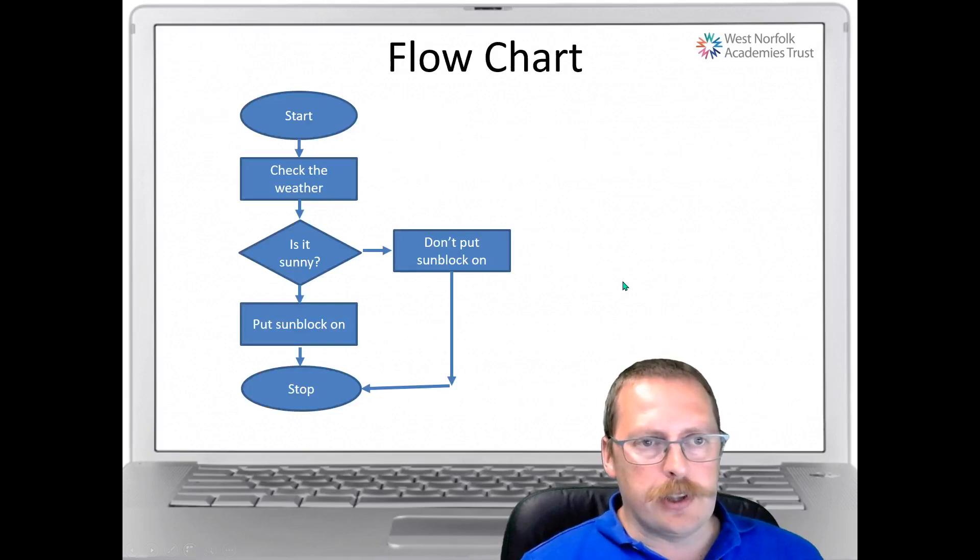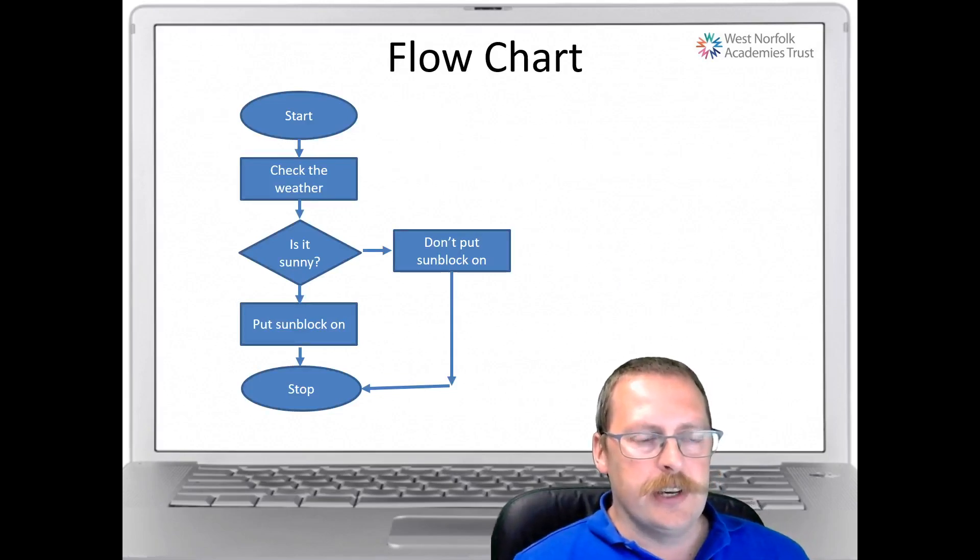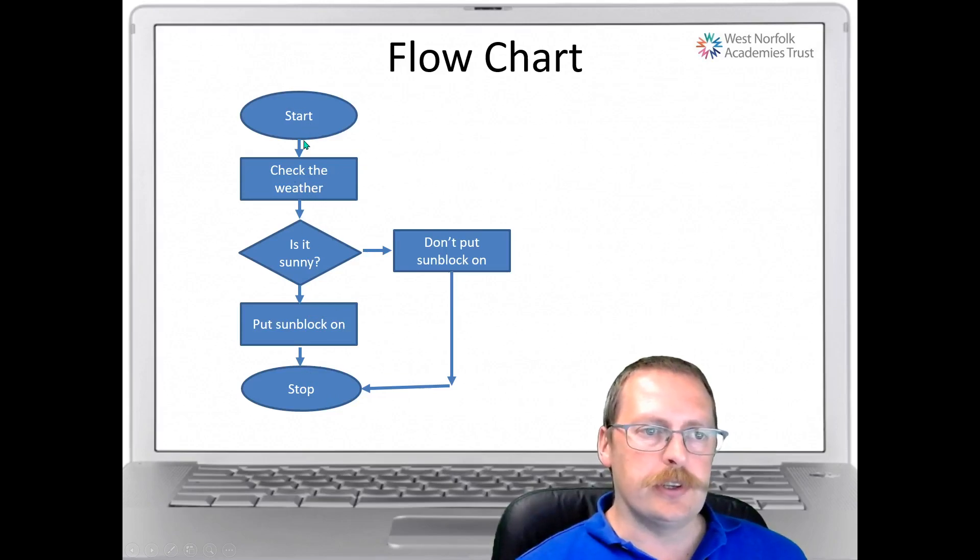So here's a flowchart. This is what I'm doing at the moment. If I go out for my daily exercise, I check the weather. I look to see if it's sunny. If it's sunny, I put sunblock on. If it's not sunny, I don't put sunblock on. So this is a flowchart. It's a series of instructions moving down one after another in sequence using the direction of flow. So we start here with a terminator, and our flowchart ends with a terminator.